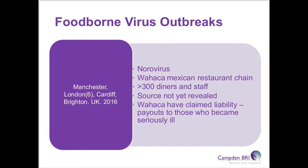One of the latest outbreaks in the UK has been associated with the Oaxaca Mexican restaurant chain, where over 300 diners and staff became infected with norovirus. As yet the source hasn't been revealed, but they have claimed liability and started payouts to those who became seriously ill. Serious illness usually only occurs where there has been an underlying illness already. Public Health England will be producing a report on this in due course.